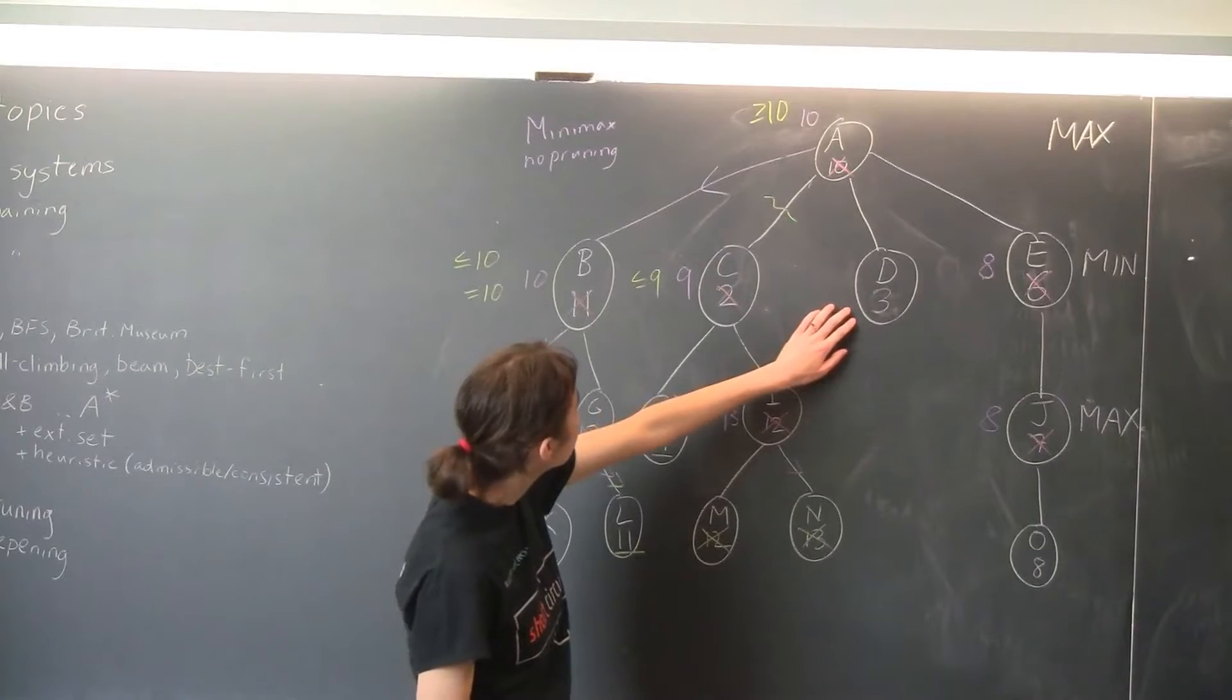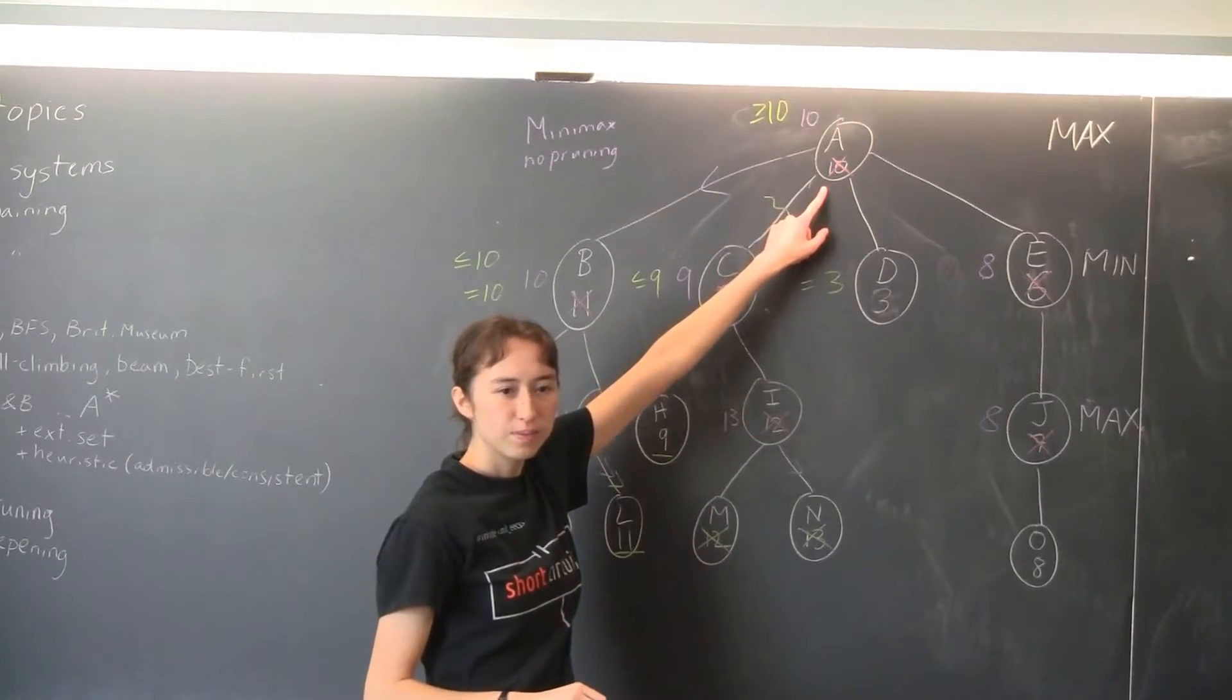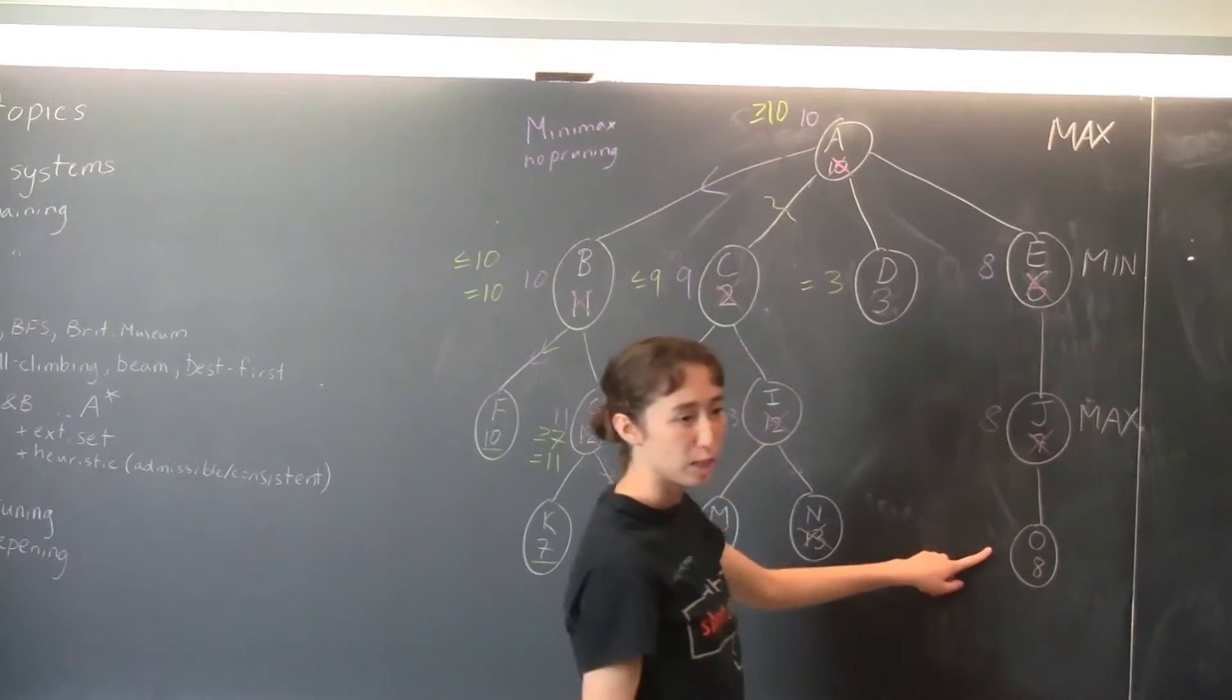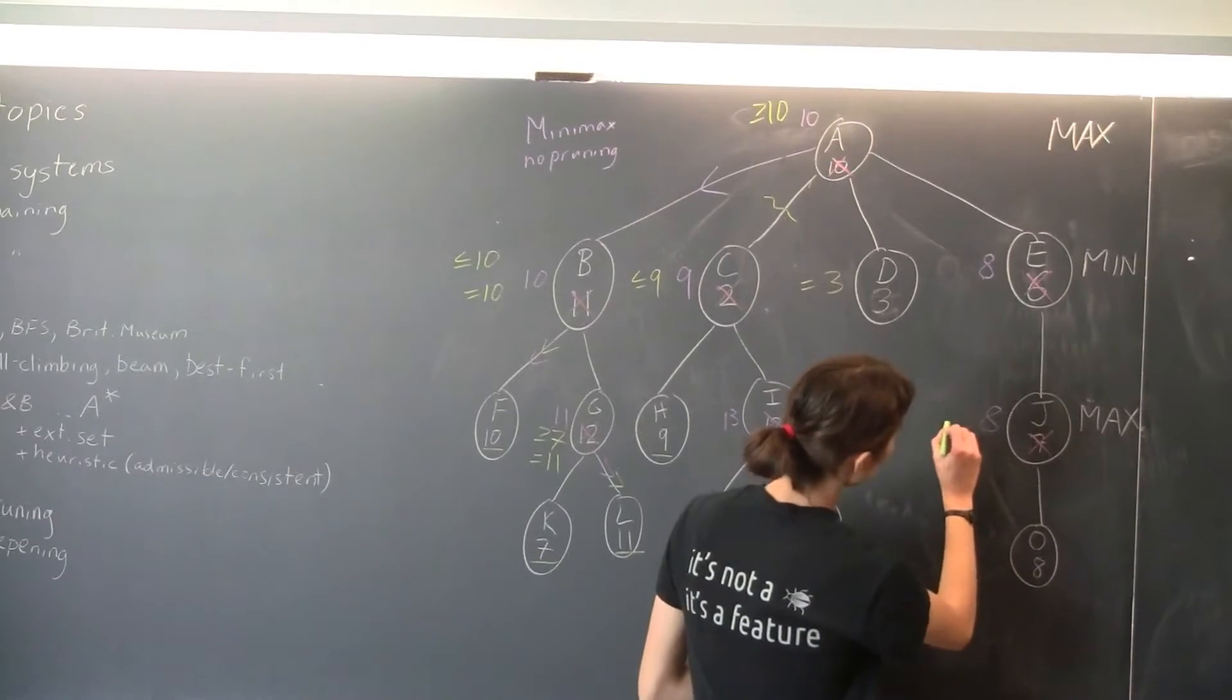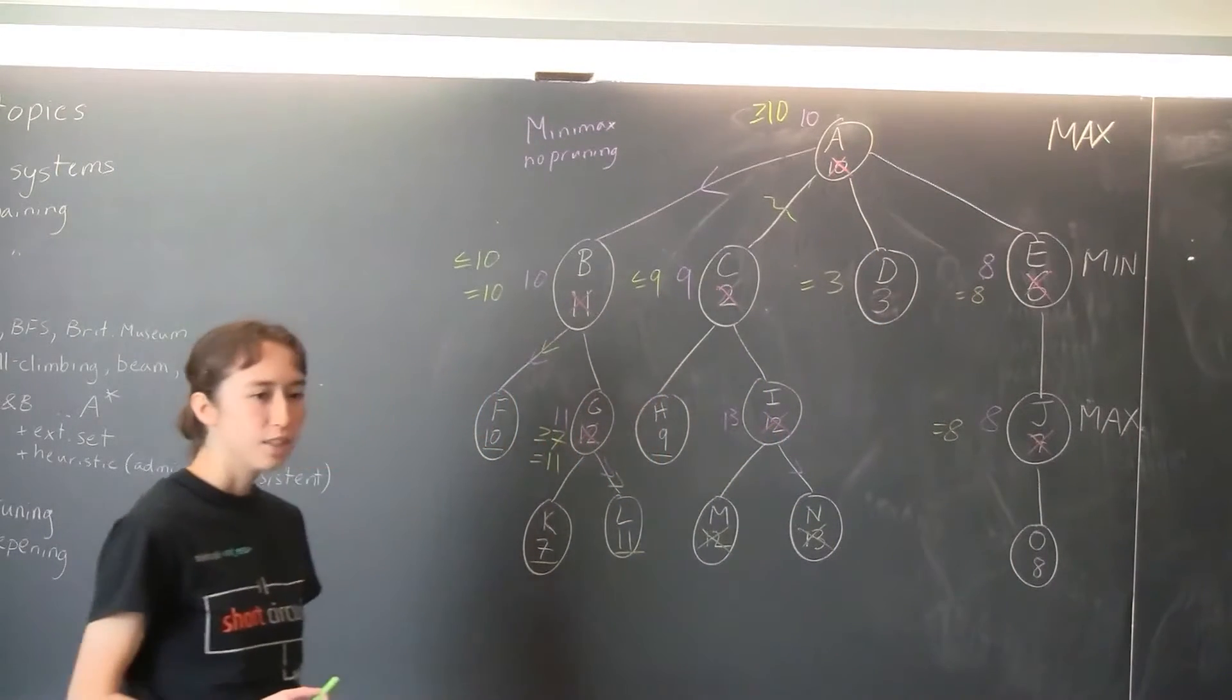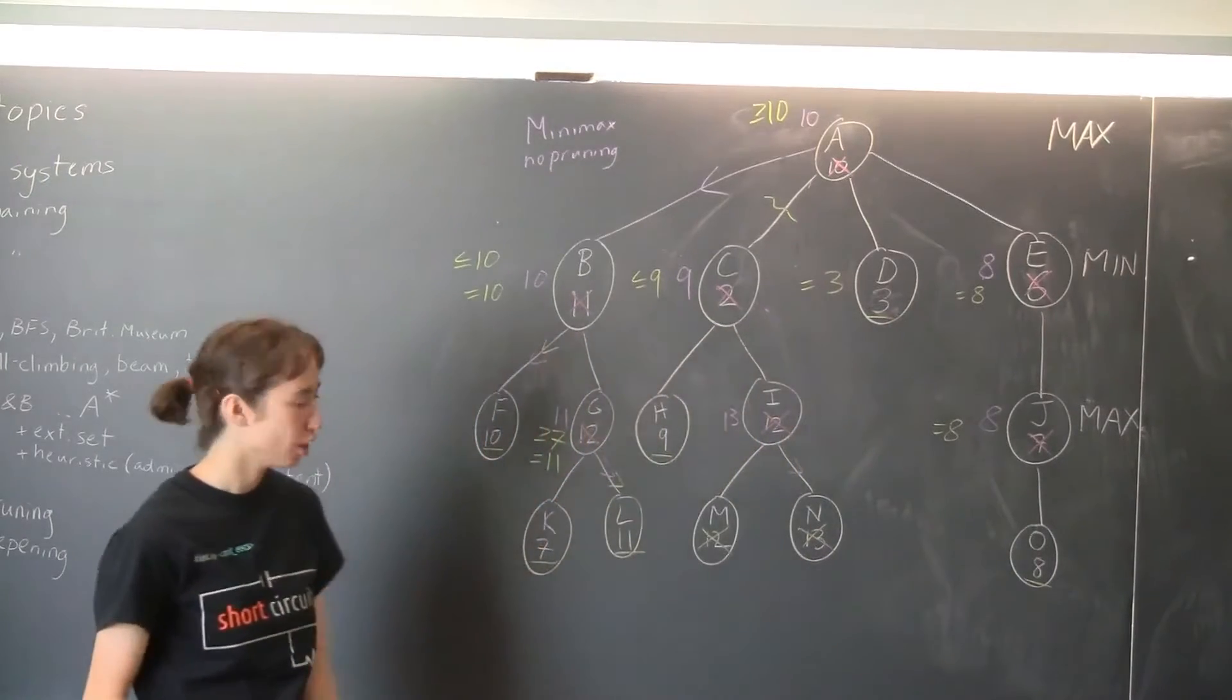So then we go to D. Looks like this is, min gets exactly 3 at D. Will Max go down this branch? No, so the left branch with this 10 score still looks like the best. Then we go down this one and we have to go all the way to the bottom because this might be a big number in which case Max would want to take this branch. But it turns out it's 8, so Max gets 8 there and min gets 8 there and we don't actually want to go down that branch. So we got the same result as Minimax, which will always be the case, but we managed to evaluate slightly less nodes. So we managed to avoid evaluating M and N.